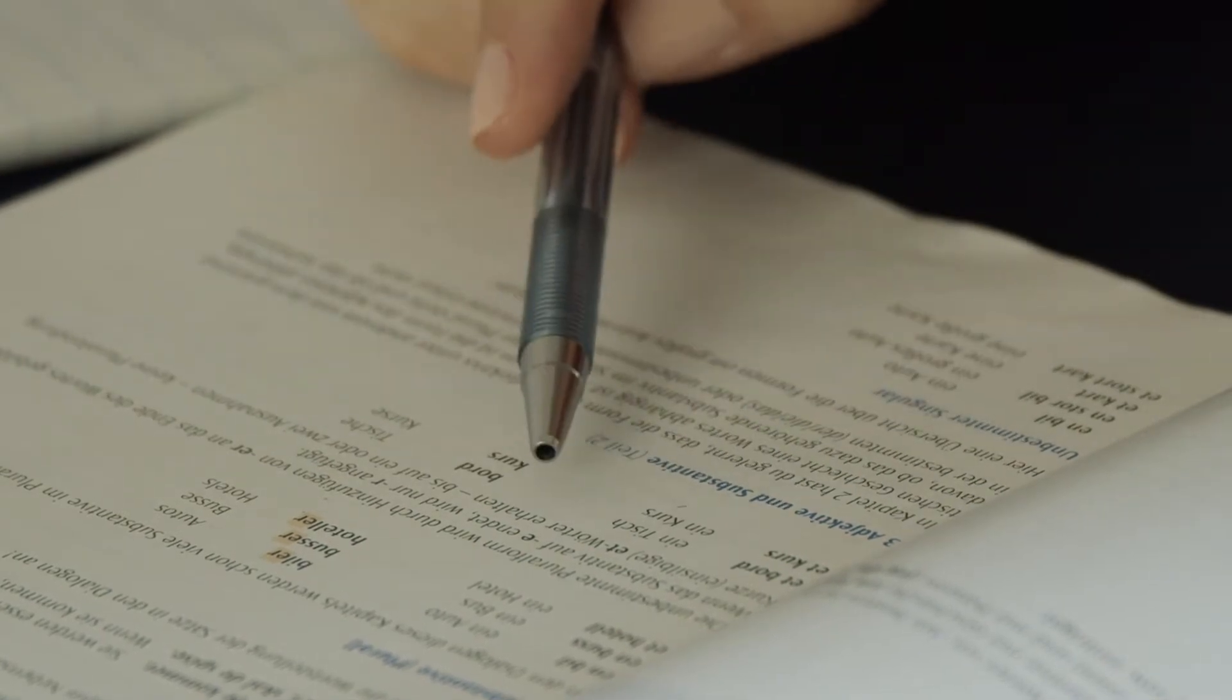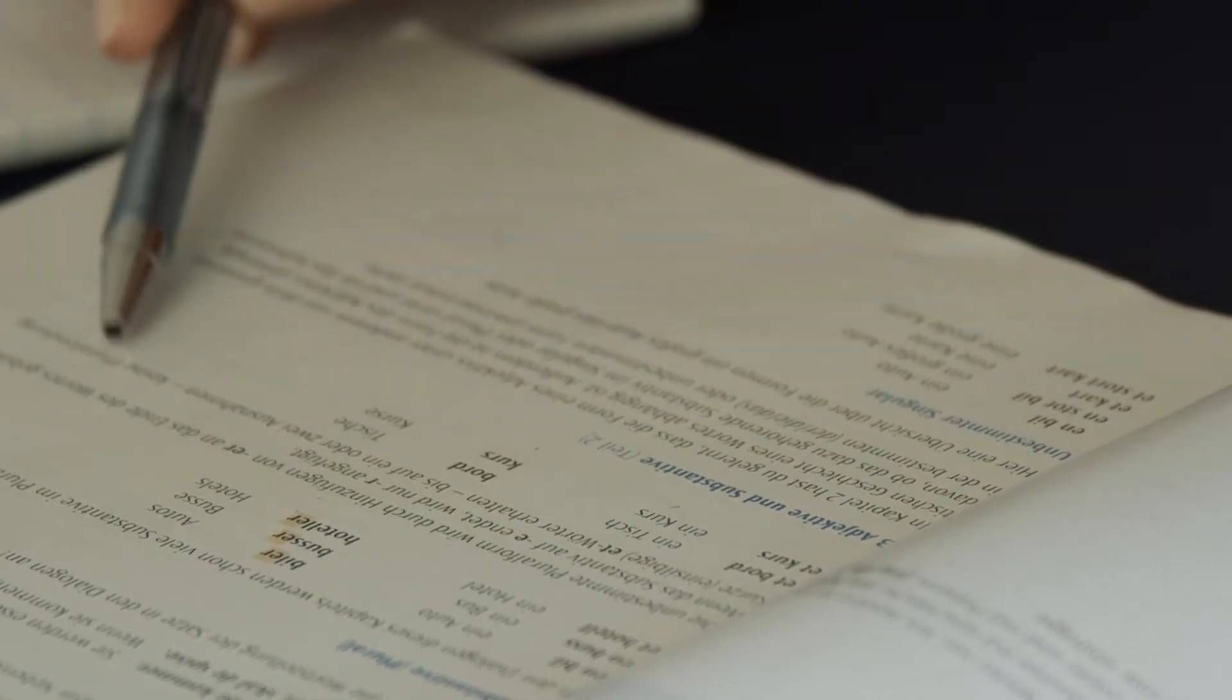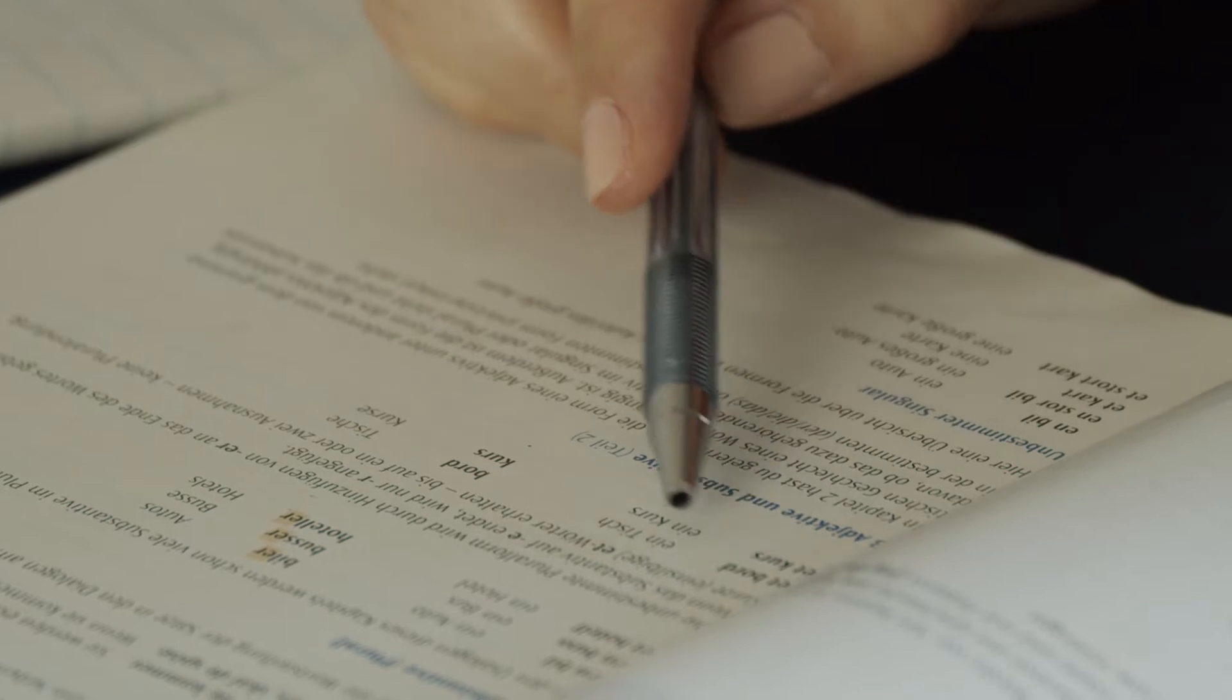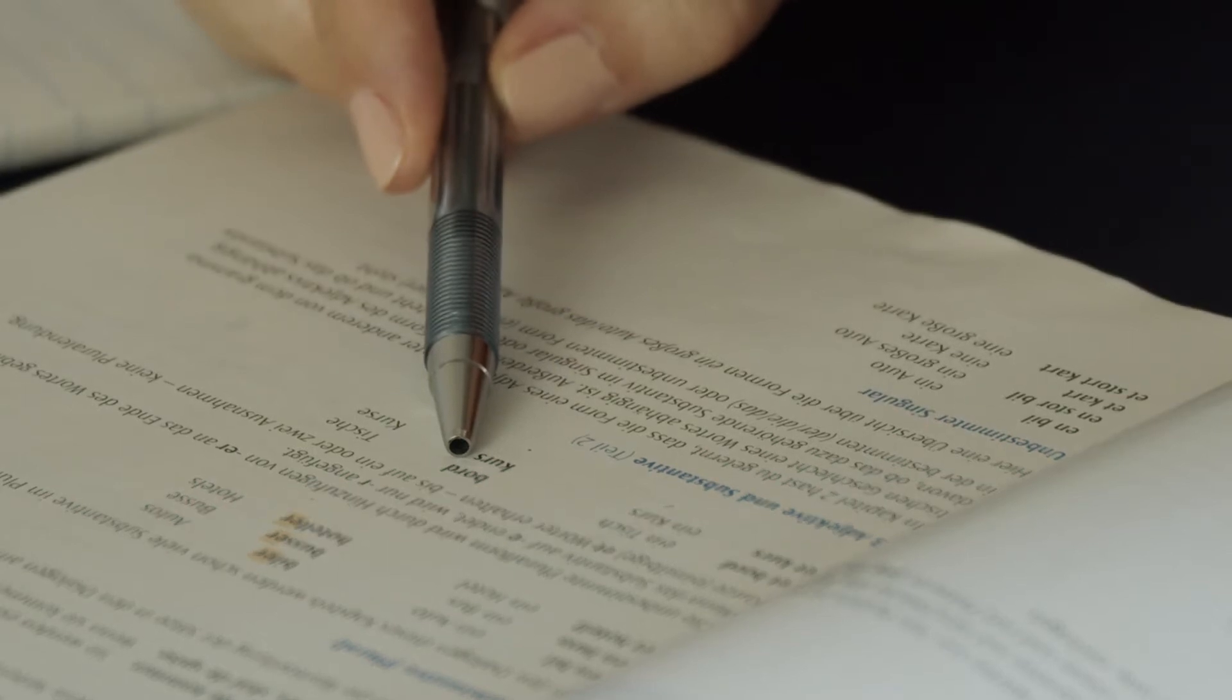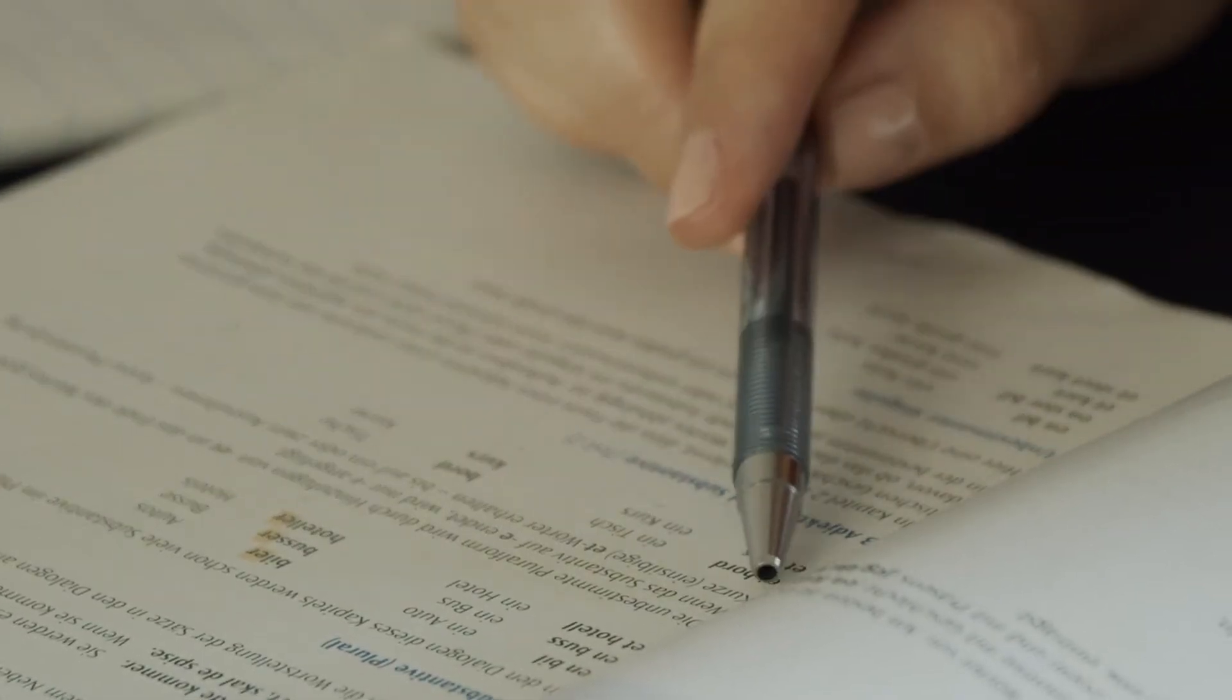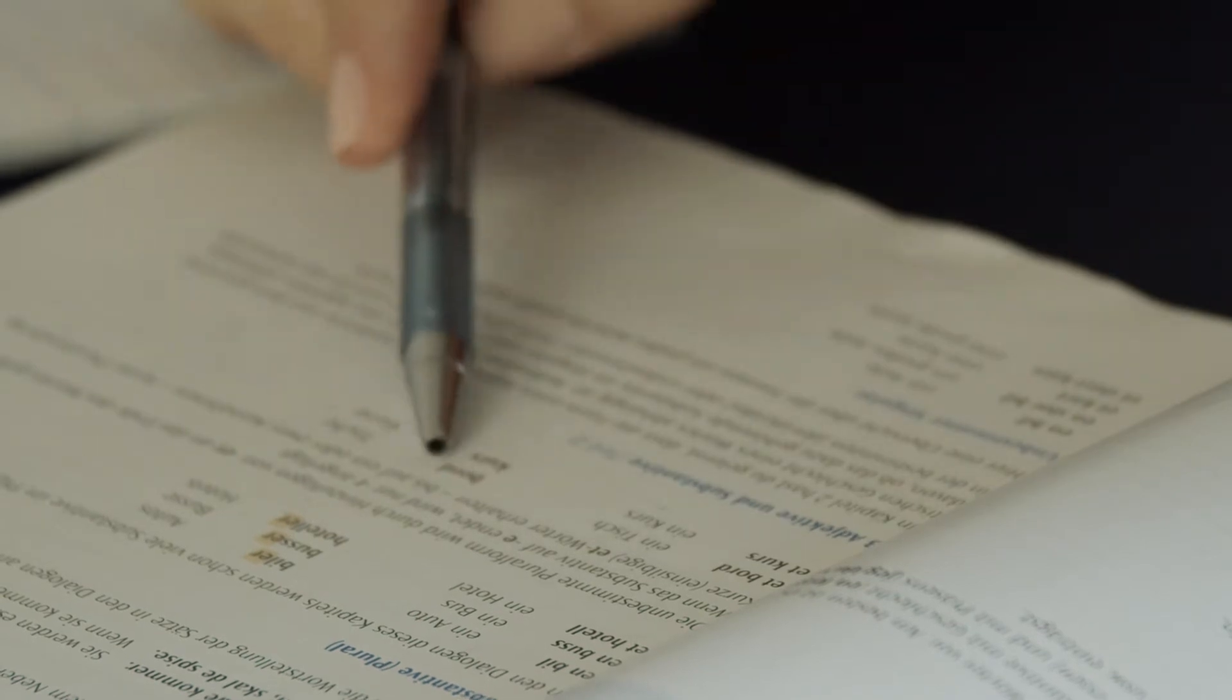Sometimes when we have very short words, so just one syllable, we would not add a plural ending. For example, et bord is a table and the plural is just bord. So this is something to keep in mind - short et-words that are just one syllable don't get a plural ending.